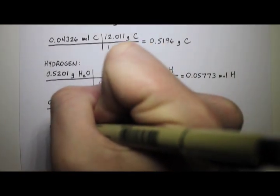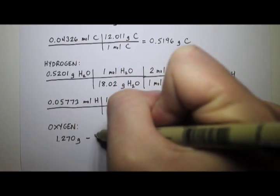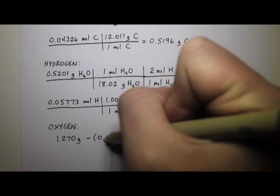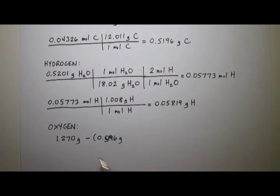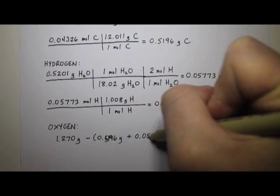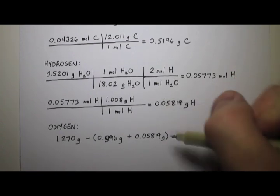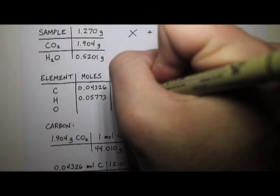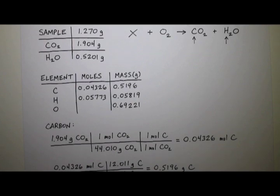So the mass of the sample, so this is for oxygen now. The mass of the sample was 1.270 grams. And if I subtract out the grams of the carbon and the hydrogen that are in the sample, what's left over should be the oxygen. Because there's only carbon, hydrogen, and oxygen in the compound. So that would be 0.5196 grams plus 0.05819 grams. And you subtract. And you end up getting, if you do the subtraction, 0.69221 grams of oxygen. So I can put that up here under the mass of oxygen. 69221.